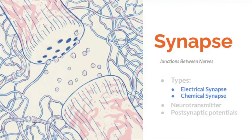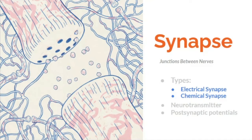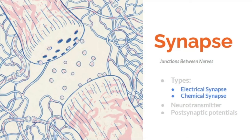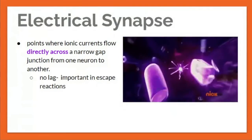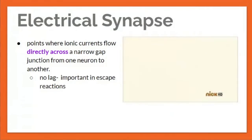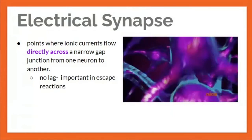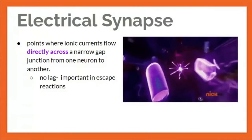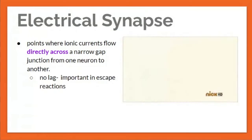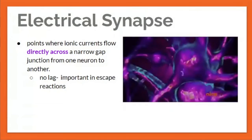The synapse is a junction between nerves. The two types are the electrical synapse and the chemical synapse. In an electrical synapse, ionic currents flow directly across a narrow gap junction from one neuron to another — meaning there is no lag.